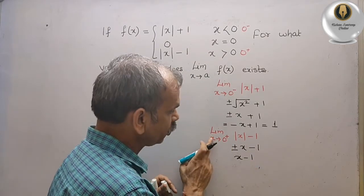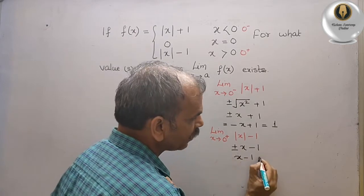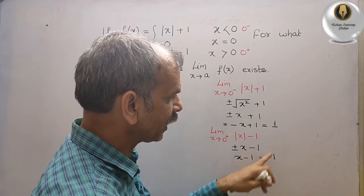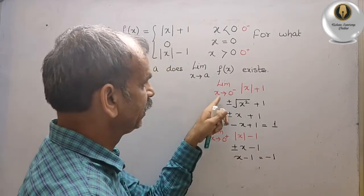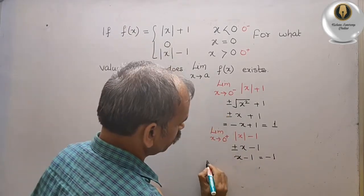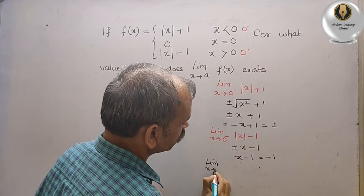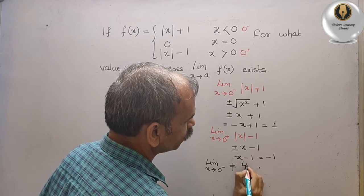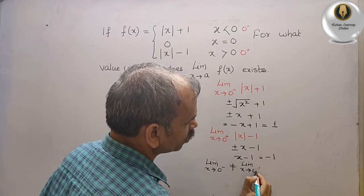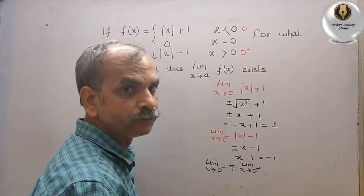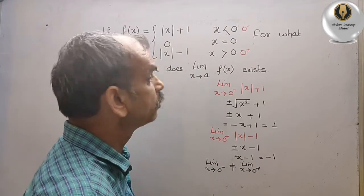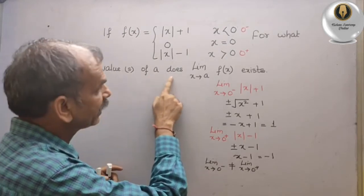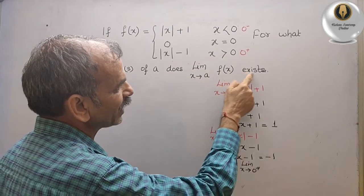Since x tends to 0 plus, the value is positive, so we take plus x minus 1. Substituting 0, we get minus 1. Seeing that the left-hand limit equals 1 and the right-hand limit equals minus 1, we conclude the limit as x tends to 0 from the left is NOT equal to the limit as x tends to 0 from the right.